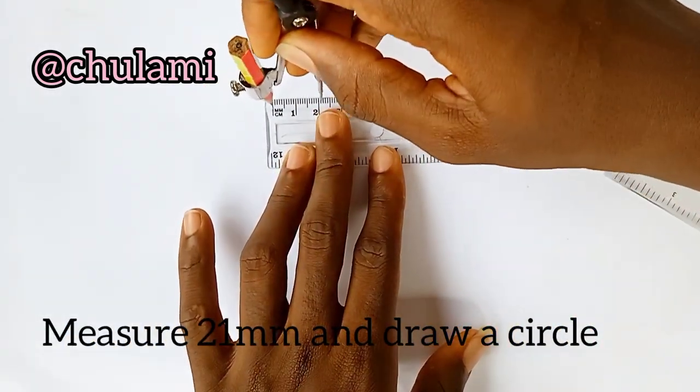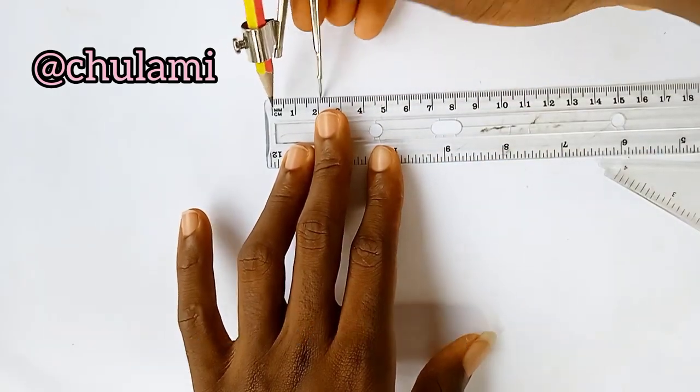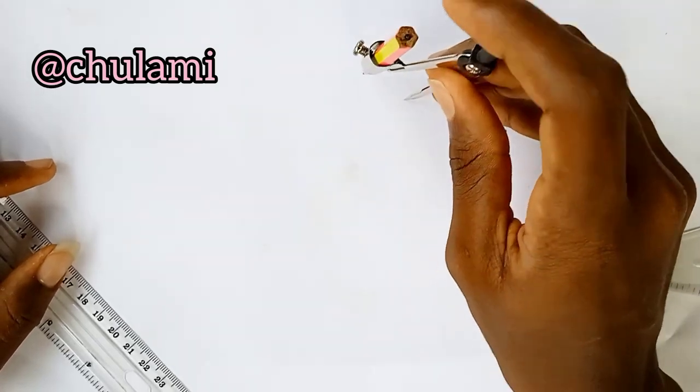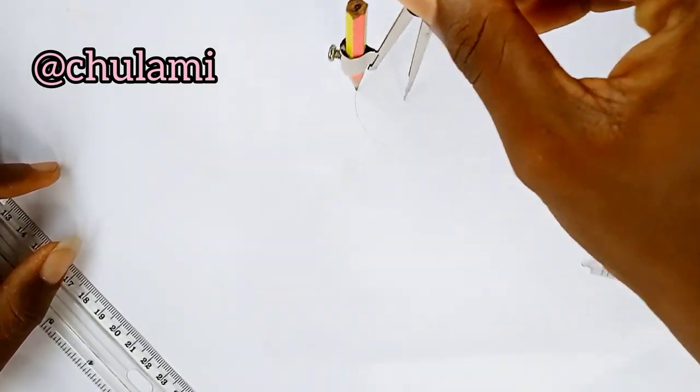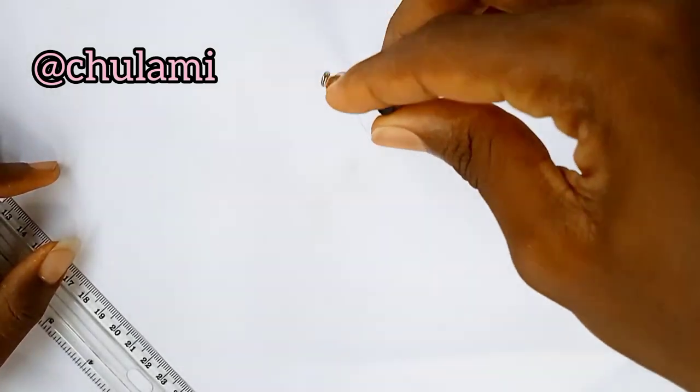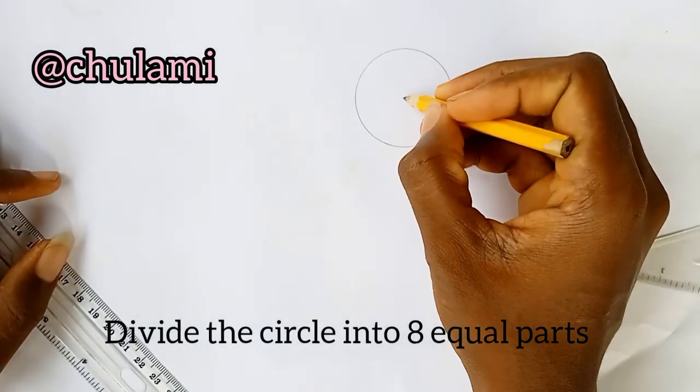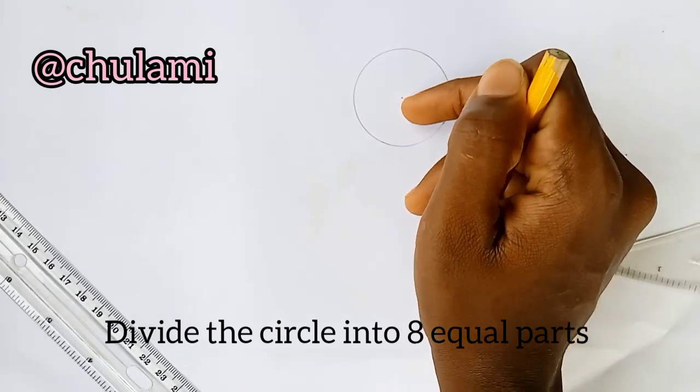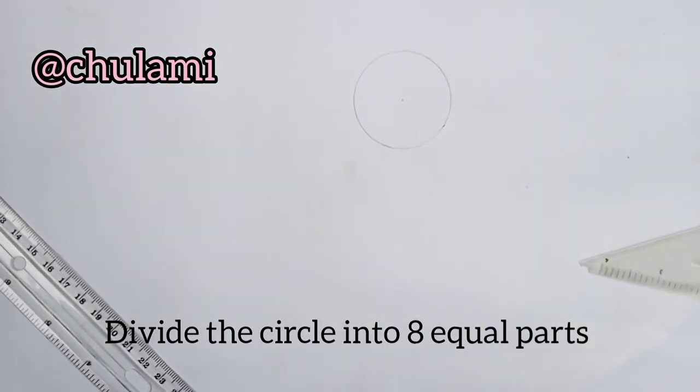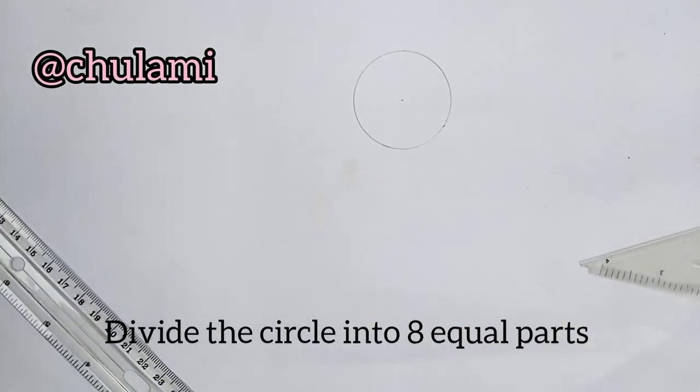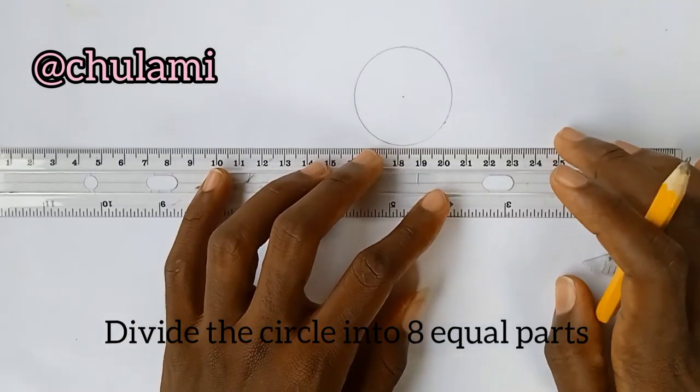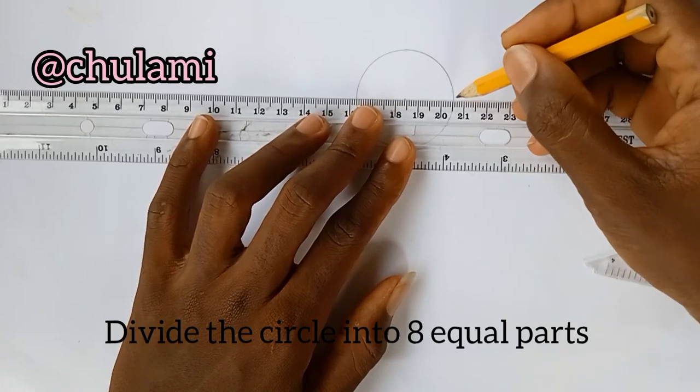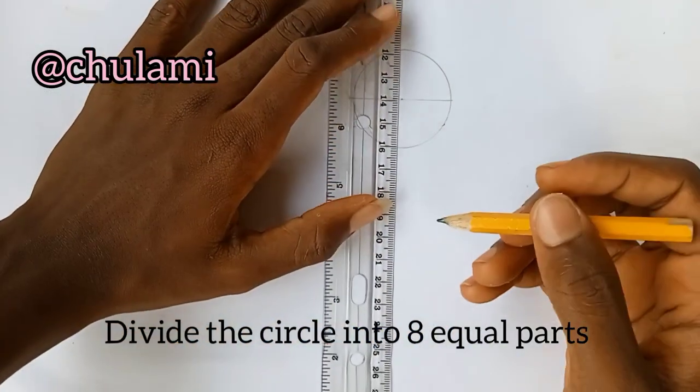This is 21. And then we'll draw a circle towards the center. So this is our circle. Mark the center point and then we're dividing this circle into eight equal parts. Now we'll draw a horizontal line and then our vertical line.